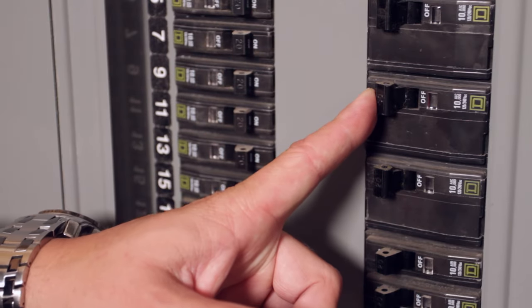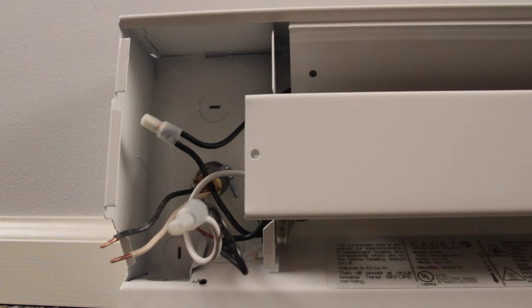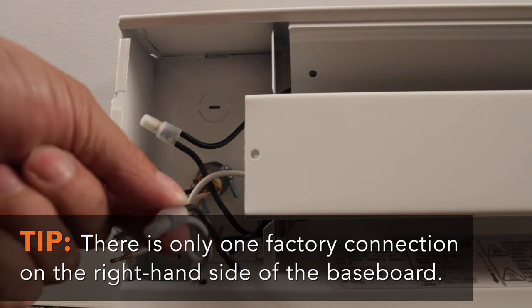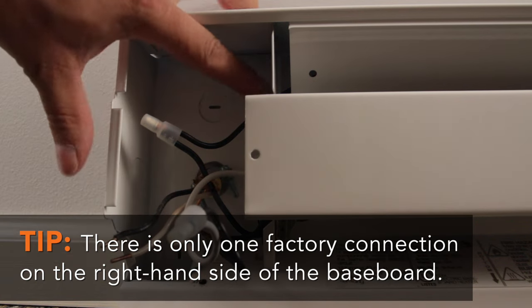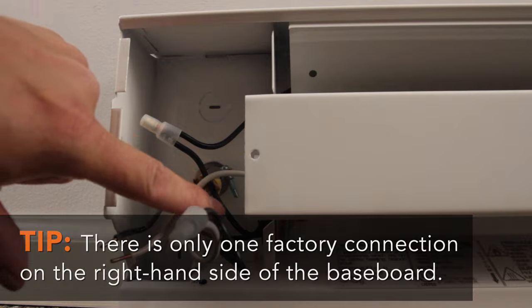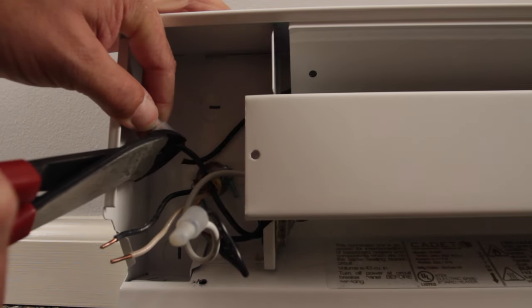Before you do anything else, you're gonna want to turn your breaker off. There are two factory connections. Find the one that does not have the white wire and cut that factory connection.